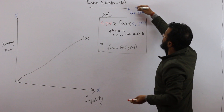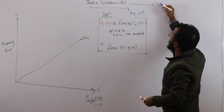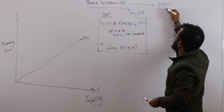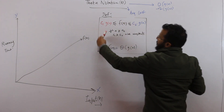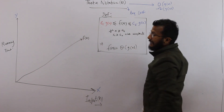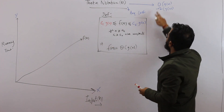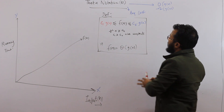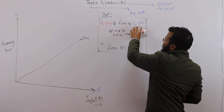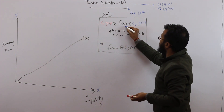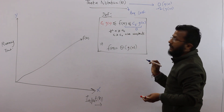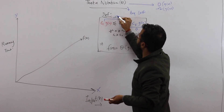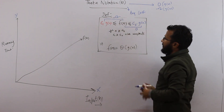To prove theta notation, you have to show that f(n) is Big-O as well as Omega of g(n). If f(n) is both upper bounded and lower bounded, then we say it's theta notation. By definition, you must show that f(n) ≤ c₂·g(n) — which corresponds to Big-O — and also that f(n) ≥ c₁·g(n) — which corresponds to Omega.